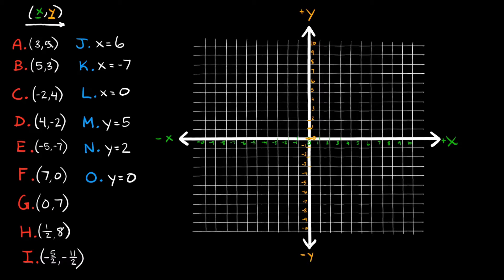Let's plot some points. Point A is at the coordinate (3, 5). The first number tells you how many spaces you move along the x-axis, and the second number tells you how many spaces you move along the y-axis. So here we have positive 3, positive 5. Starting from the origin, we move three spaces in the positive x-direction — 1, 2, 3 — and then five spaces in the positive y-direction — 1, 2, 3, 4, 5. So this point right here is point A at (3, 5).